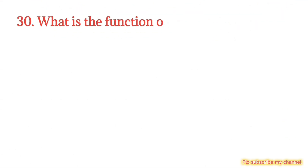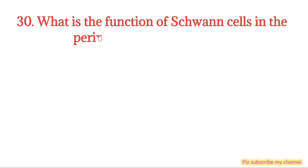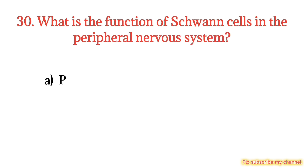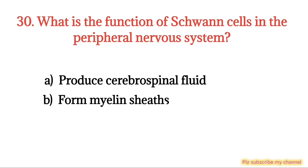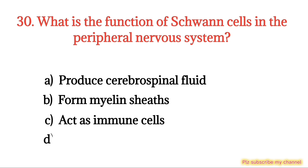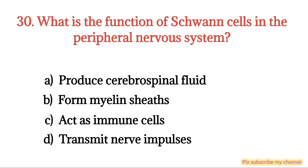MCQ number 30. What is the function of Schwann cells in the peripheral nervous system? Option A: Produce cerebrospinal fluid. Option B: Form myelin sheath. Option C: Filter immune response. Option D: Transmit nerve impulse. The right option is Option B.